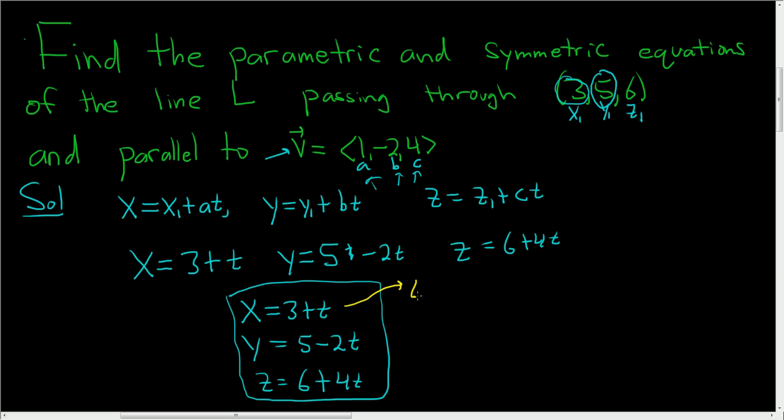If we solve this for t, we get t equals x minus 3. If we solve this for t, we would subtract the 5, so we would get y minus 5, and then we would divide by negative 2.